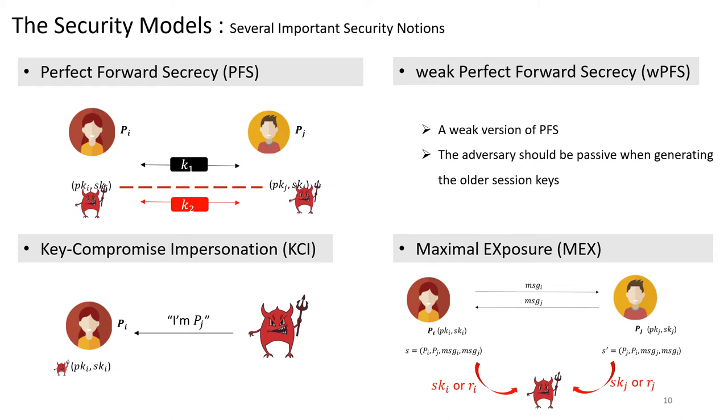Before introducing the security models, we also introduce several important security notions. The first is perfect forward security PFS. It states that the compromise of long-term keys of both sides do not affect the security of older session keys. The second is weak perfect forward security WPFS. It's a weak version of PFS. The adversary should be passive when generating the older session keys. The third is key compromise impersonation KCI. In this attack, the adversary gets the long-term key of some party Pi and then tries to authenticate itself as some other party Pj. The last is maximum exposure. In this attack, the adversary can get keys on both sides, but at most one on each side.